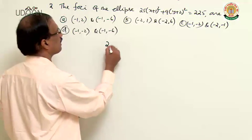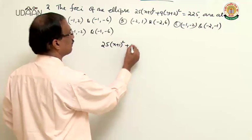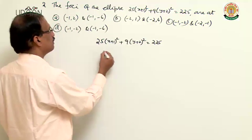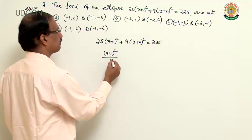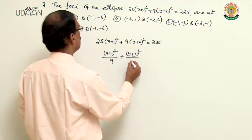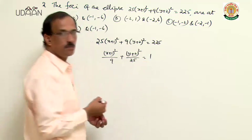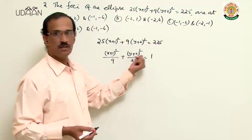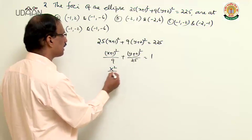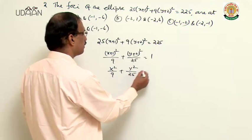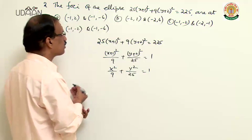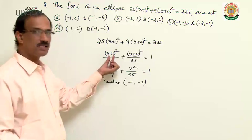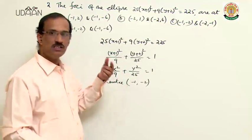Rewriting: 25(x+1)² + 9(y+2)² = 225. Dividing by 225: (x+1)²/9 + (y+2)²/25 = 1. This is a shifted ellipse. In standard form X²/9 + Y²/25 = 1, where the center is at x+1=0, y+2=0, giving center (-1, -2).